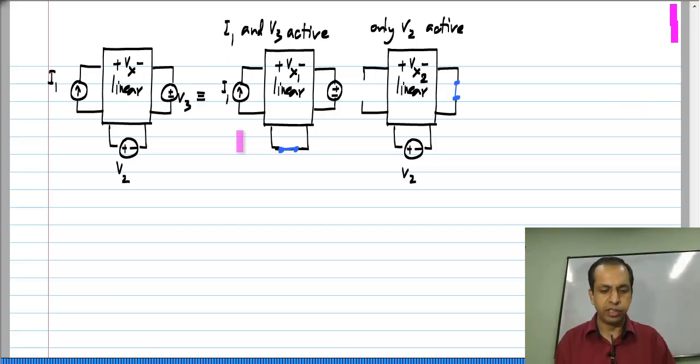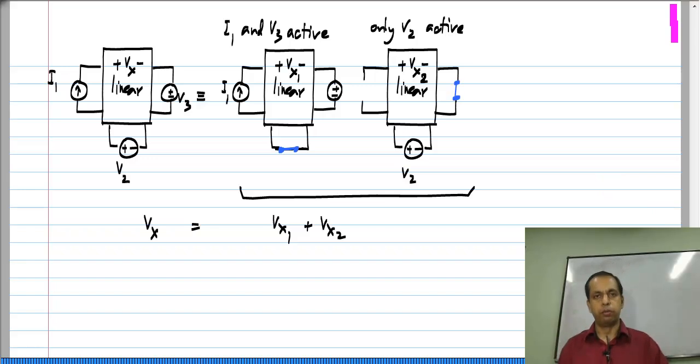So, here I_1 and V_3 are considered in this case and V_2 is considered in that case. So, this is fine. So, I could superpose just these two cases and V_x will be equal to V_x1 obtained when I_1 and V_3 are active plus V_x2 which is obtained when V_2 is active. So, that is all I wanted to extend in the previous case.